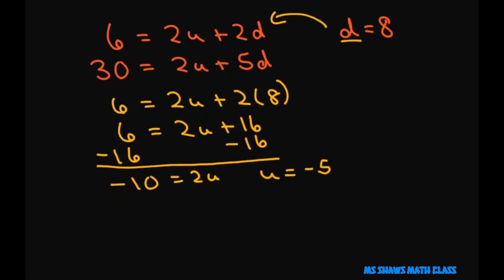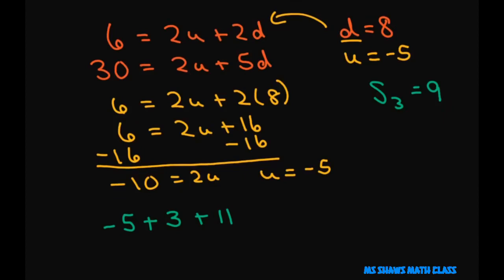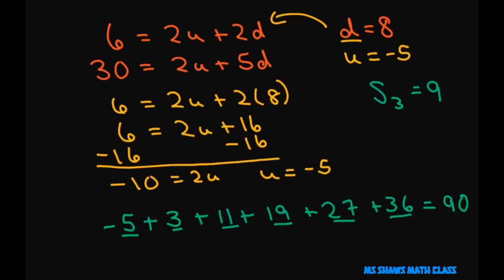So our common difference is 8 and our first term is negative 5. The sequence looks like: negative 5, then add 8 to get 3, add 8 to get 11 — and those three terms sum to 9, which checks out. Adding three more terms: 19, 27, 35 — and all six terms sum to 90, confirming our values.